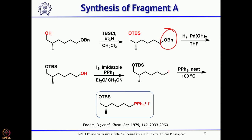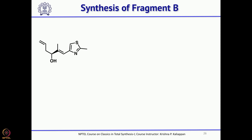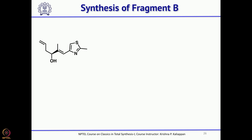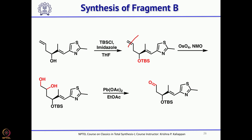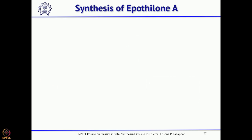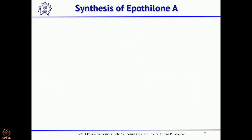For Fragment B, the synthesis of the homoallylic alcohol was already discussed during the first-generation synthesis of Epothilone by Nicolaou. The secondary alcohol was protected, and then a two-step protocol cleaved the double bond to give the aldehyde. Fragments A and B were then combined using a Wittig reaction, which gives the cis double bond.